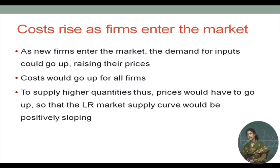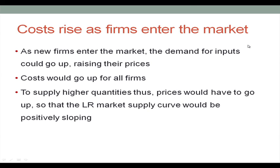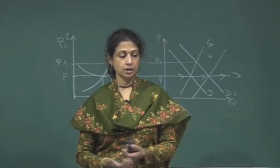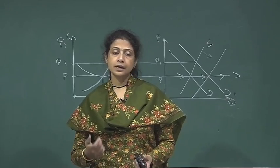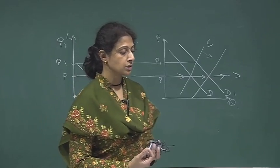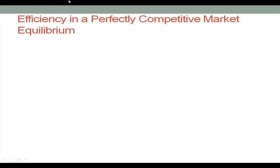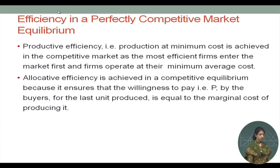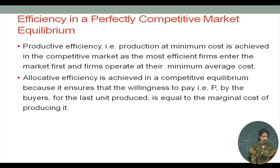In both situations, relaxing either assumption makes it possible to have a positively sloping long run supply curve in a perfectly competitive market. Coming to the last question from our first discussion on perfectly competitive market: is the equilibrium efficient? There could be two levels of efficiency — productive efficiency and allocative efficiency. Productive efficiency is basically production at minimum cost. Productive efficiency is achieved in a competitive market as the most efficient firms enter the market first and firms operate at their minimum average cost.